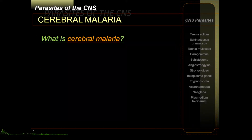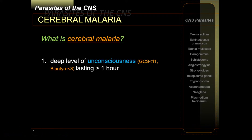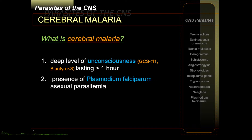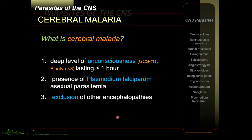Clinically, what is cerebral malaria? There is the WHO scoring of cerebral malaria: a deep level of unconsciousness — either a GCS score of less than 11 for adults, or less than 3 on the Blantyre scale for infants — which lasts for more than one hour, with presence of Plasmodium falciparum in peripheral blood smear, and excluding other encephalopathies. Practically speaking, if your patient is positive for Plasmodium falciparum and is manifesting with decreased consciousness, you have to consider cerebral malaria.